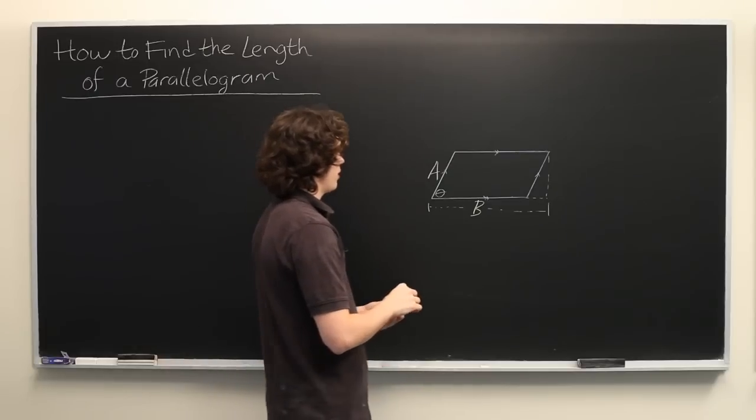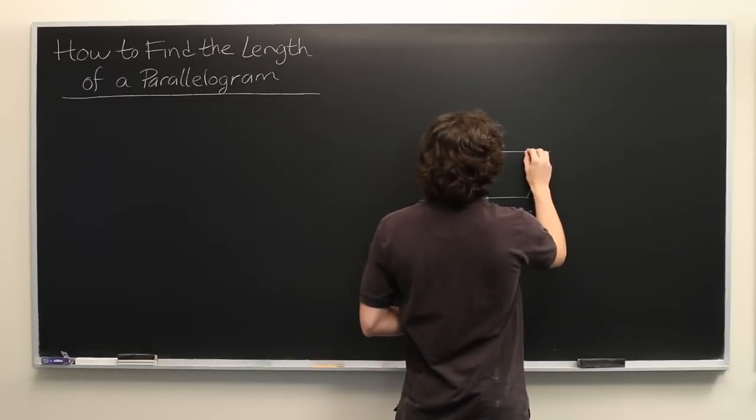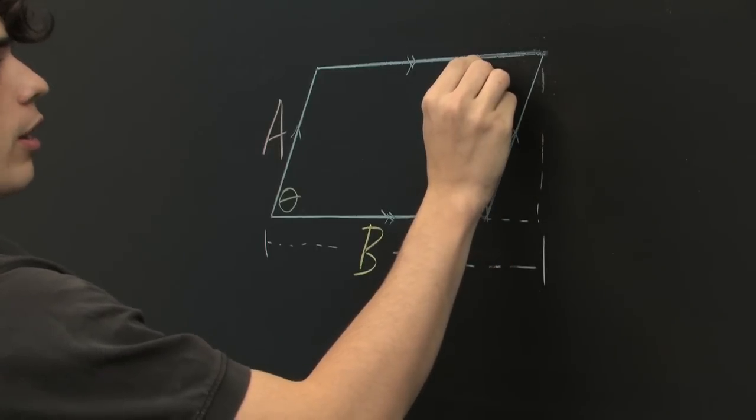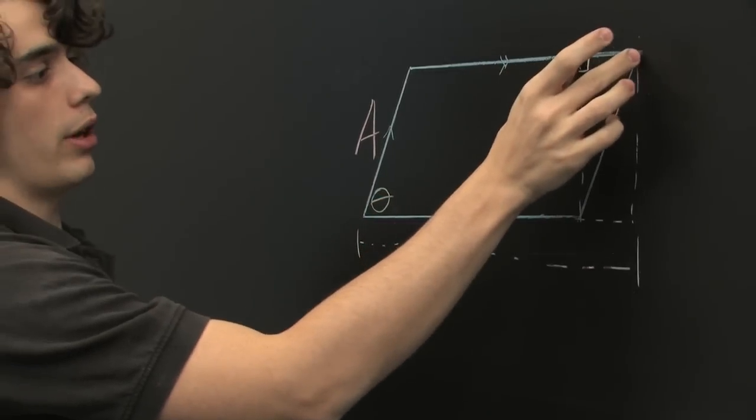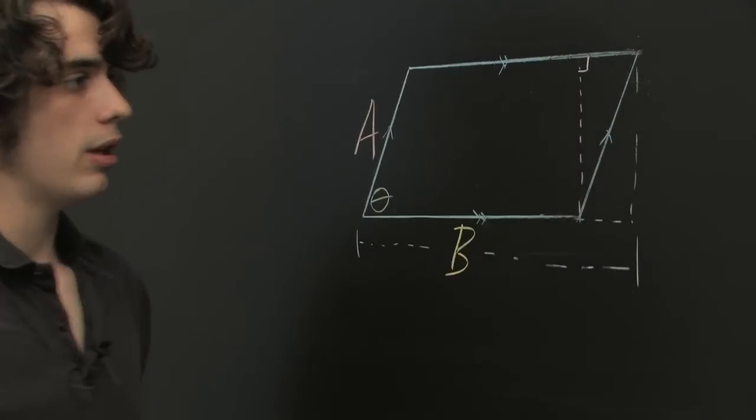Well, it's helpful to drop down a height from right here, so this forms a right angle with the top. And we can think of this sliver right here as being a right triangle.